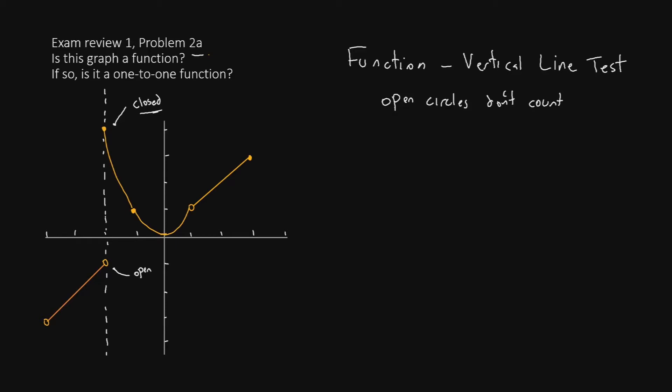If we look at the rest of the line — this diagonal piece, this curve, and this diagonal piece — no matter what vertical line we draw, it will only go through once. So based on that, we can say yes, this is a function.